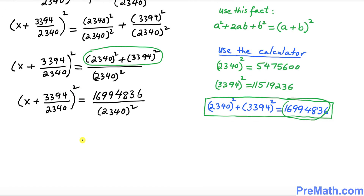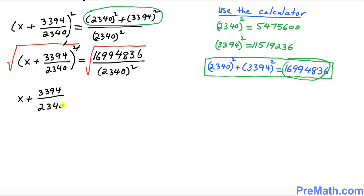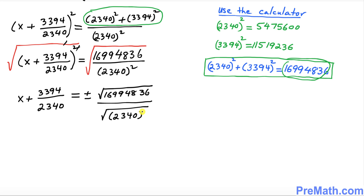Now we want to isolate x. To undo the square, we take the square root on both sides. The square and square root undo each other, giving us x plus 3394 over 2340 equals positive or negative the square root of 16,994,836 divided by the square root of 2340 squared.